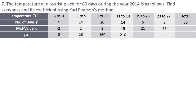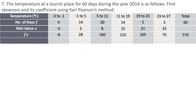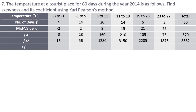Remember the first fx value is −8, so it will be subtracted when totalling. The total Σfx = 570. For fx², multiply fx by x: 8×2=16 (i.e. |−8|×2), 28×2=56, 160×8=1280, 210×15=3150, and so on — total Σfx² = 8582. The cumulative frequency column is: 4, 18, 38, 52, 57, 60.